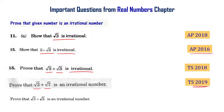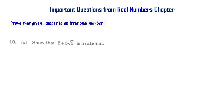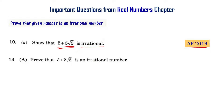Prove that root 3 plus root 5 is an irrational number — that is AP final exam supplementary 2016. Show that 2 plus 5 root 3 is an irrational number — that is AP final exam 2019. Prove that 3 plus 2 root 5 is an irrational number — that is Telangana final exam 2015.